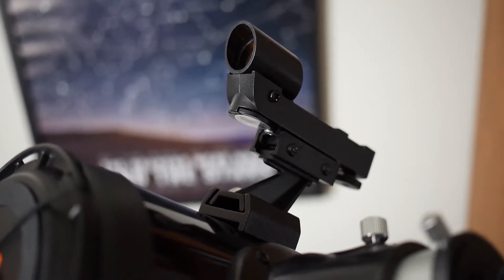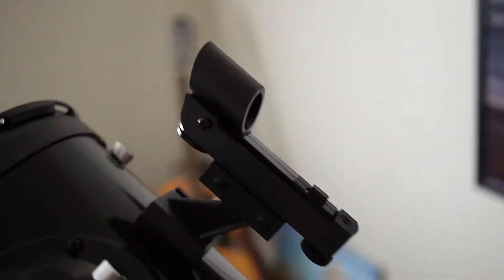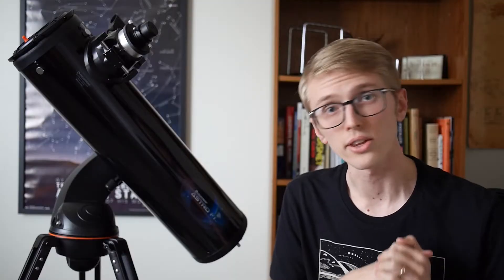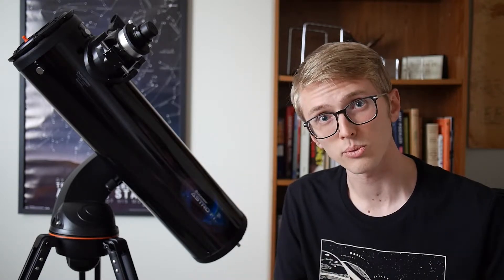The red dot finder scope on this thing is pretty great in that you don't have to deal with reverse images when you're looking through it like you do with some other finder scopes. Just make sure that you turn off the red dot before you put it away for the night to save that battery. The dials make aligning your finder scope a breeze.